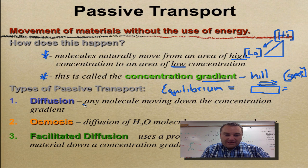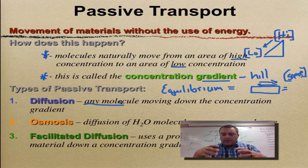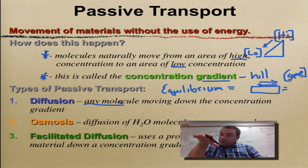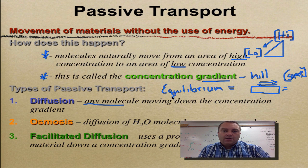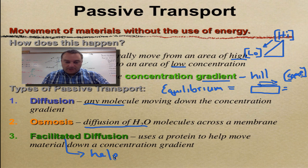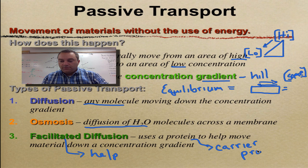Passive transport comes in three flavors. Number one is called diffusion — the movement of any molecule down the concentration gradient. We've all experienced this. For example, you're in the living room watching TV and you smell pizza from the kitchen. The kitchen has a high concentration of pizza molecules; where you're sitting has a low concentration. Those molecules move from the kitchen to the living room until the whole house smells like pizza. Second, osmosis is simply the diffusion of water — we'll go over that in detail. Third, facilitated diffusion uses carrier proteins to help move things from high to low concentration.